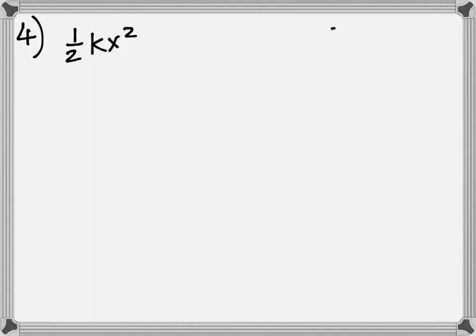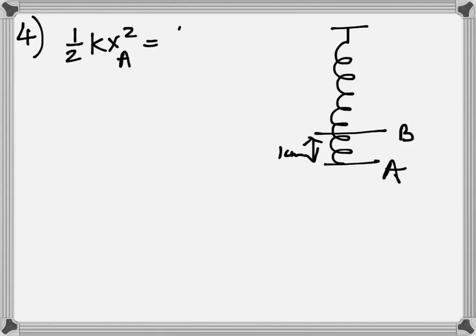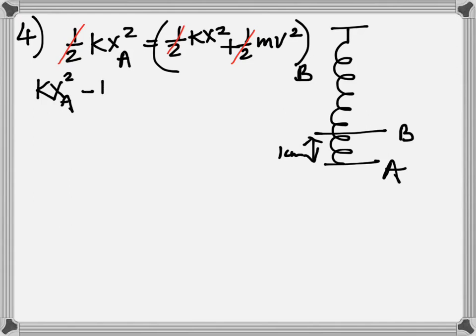You know that the potential energy of a spring is 1 half K delta X squared. When you stretch it to point A, you're giving it potential energy, then it's going back to point B. At point B, it'll have both potential energy and kinetic energy because it's already moving. Remember, the spring is still stretched. Potential energy at A equals sum of potential plus kinetic at B. That's the concept.